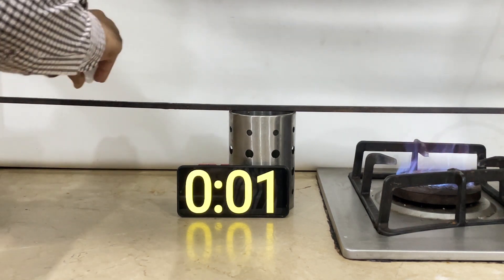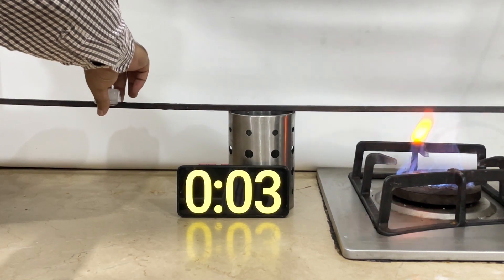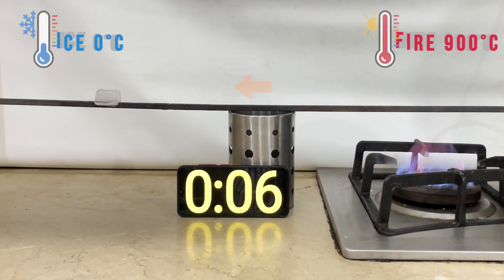In the second phase we placed the ice cube on one end of the rod and started to heat the other end with the help of a burner.